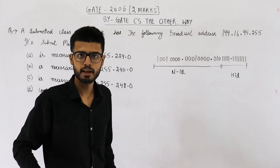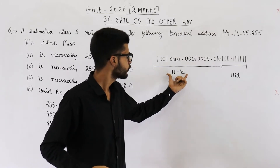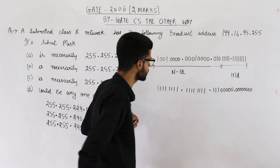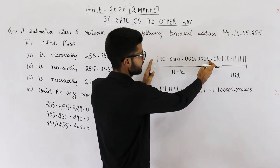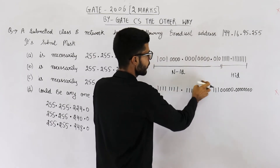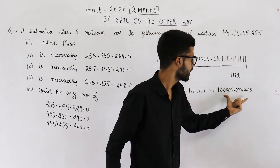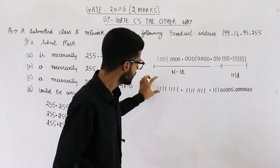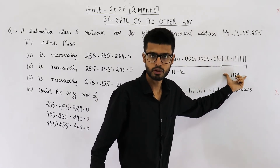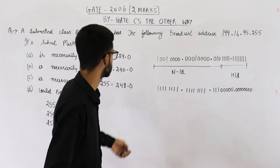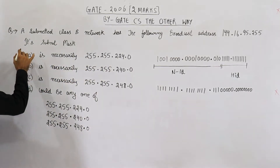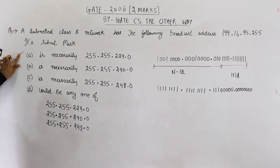According to this scenario, let us find out what will be the subnet mask. For network ID, place all ones. The first two octets are all ones, and then these three bits are ones because all of that is network ID. Then for host ID, write zeros. This is the subnet mask if those are the host ID bits. Some of you might take this as the answer and select option A.